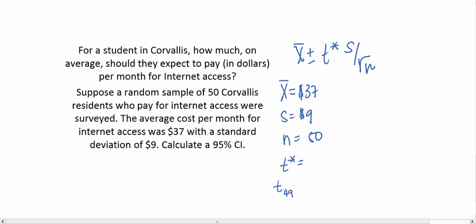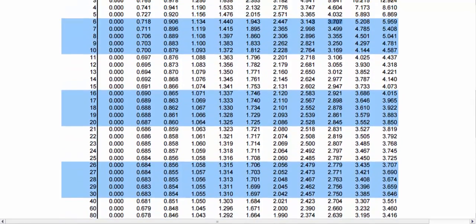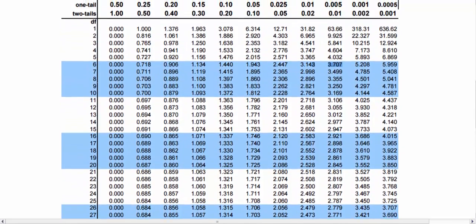So how can we find this T star? Well, we'll need to look at a T table. If we scroll up, we see that we have a T table here. We have degrees of freedom on this column. We need to find the degrees of freedom of 49.